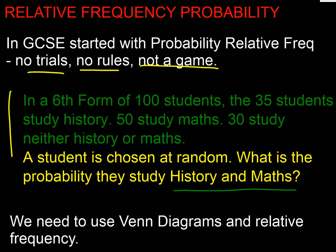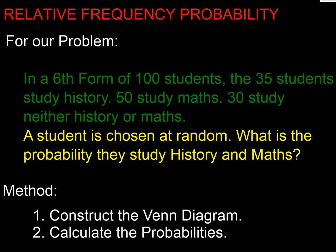We can't draw a tree for this because there's no rules, no game, so we're going to use Venn diagrams and relative frequency. That means for our problem, the first step is to construct our Venn diagram, and secondly we're going to calculate our probabilities.